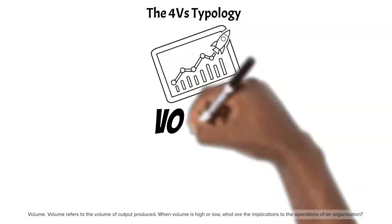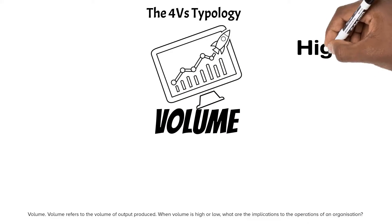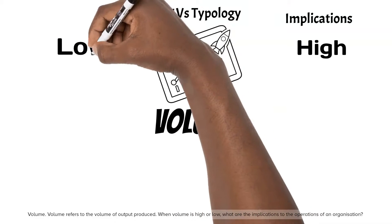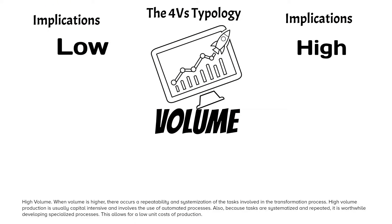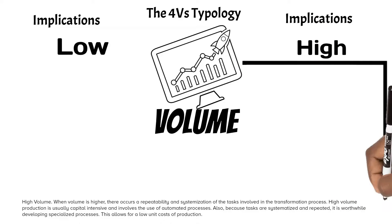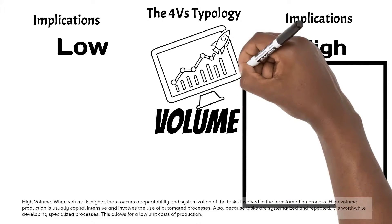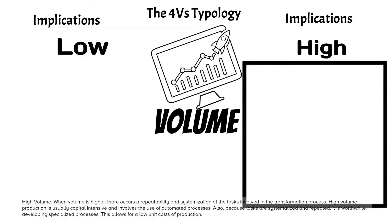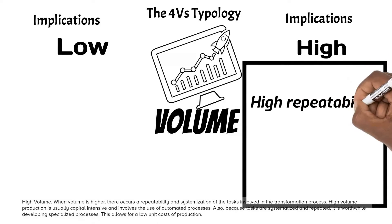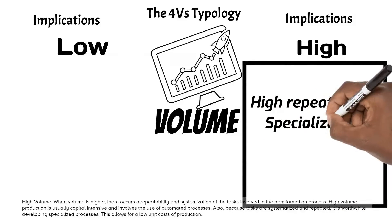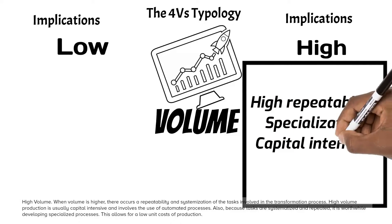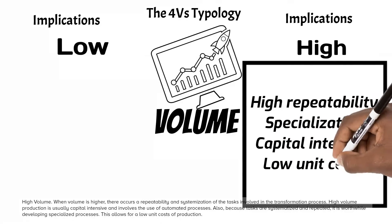Volume refers to the volume of output produced. When volume is high or low, what are the implications to the operations of an organization? High volume: when volume is higher, there occurs a repeatability and systemization of the tasks involved in the transformation process. High volume production is usually capital intensive and involves the use of automated processes. Because tasks are systematized and repeated, it is worthwhile developing specialized processes, which allows for low unit costs of production.